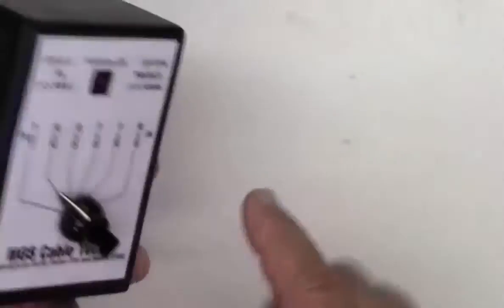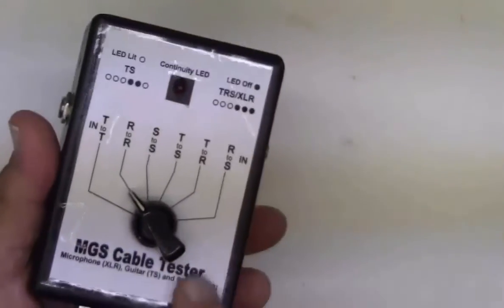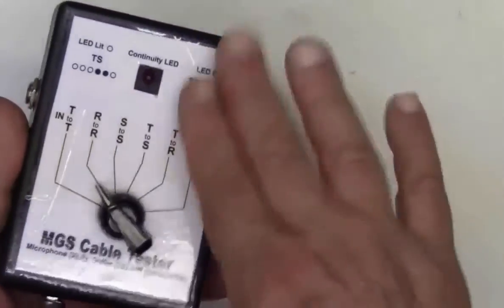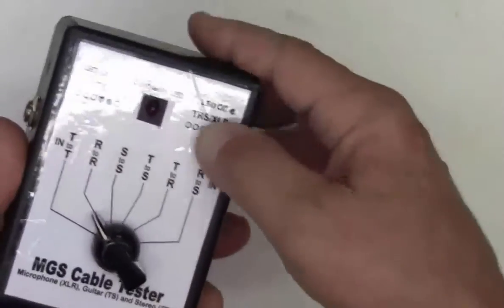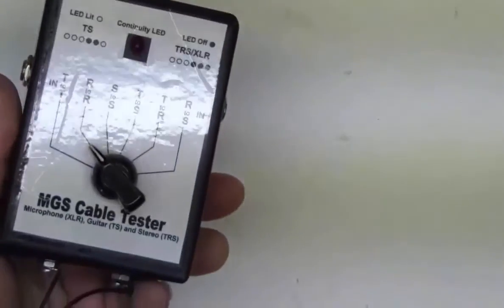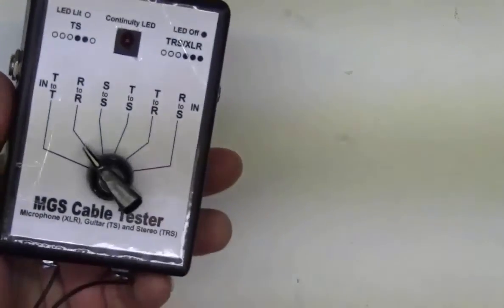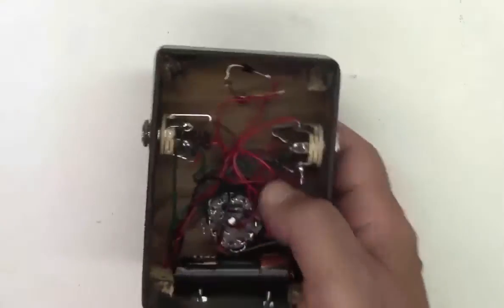I've finished the case by painting it, and I also cut out the front label, glued it onto the case, and then put some laminating plastic over it, so this case is ready to go. So let's take a look inside.